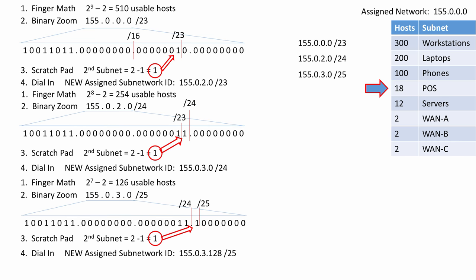I move on to the point-of-sale terminals. Using Scratchpad, I find the second subnet by dialing in a 1 in the subnet bit position between slash 24 and slash 25, giving a new network ID of 155.0.3.128/25. I know I have 18 point-of-sale terminals, so I proceed to finger math and determine I need to leave 5 host bits. I'll stop there — you can do the rest on your own. Just keep repeating this formula: working largest to smallest, top to bottom, left to right — you can VLSM subnet any size network.